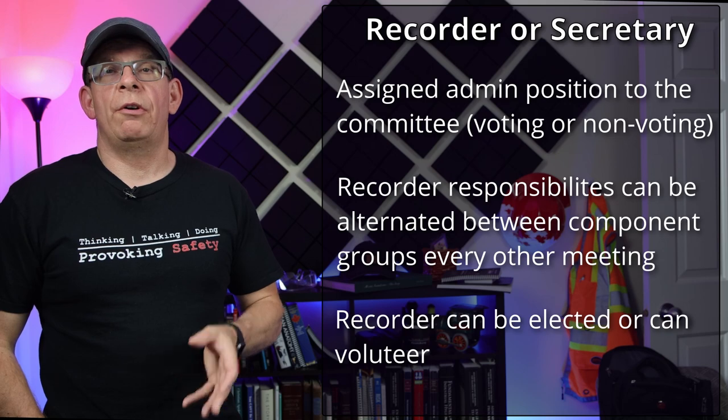Another method is to elect someone or have someone volunteer. Each role should also have an alternate — ideally from the committee — willing to step in if the co-chair or recorder is absent. Co-chairs can easily alternate for each other, as can recorders or secretaries. A word of warning though: alternates should be attending meetings at least occasionally — every second meeting — otherwise they won't have an idea of the committee dynamics.